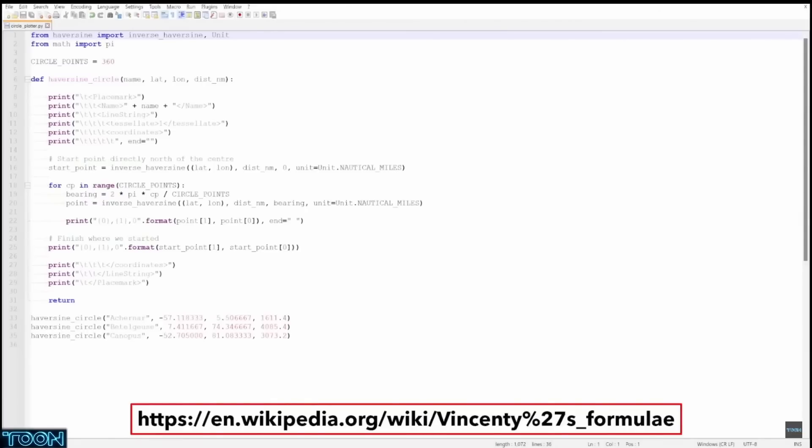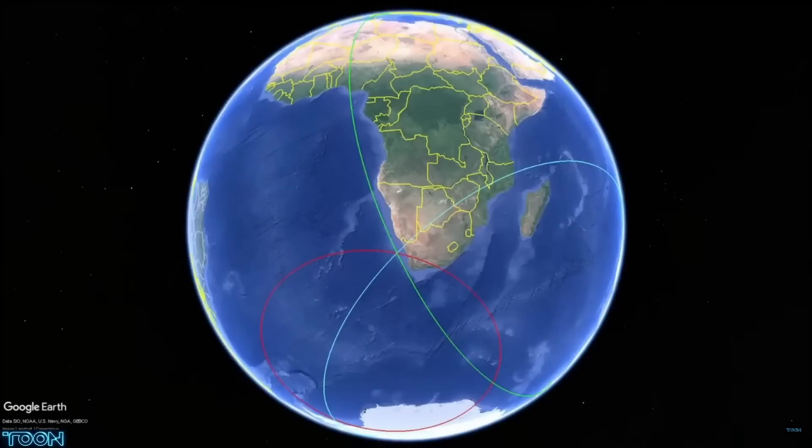But the correct formula for celestial navigation is the Haversine, so I ended up writing some Python code to draw my circles for me. Here's what it looks like in Google Earth.